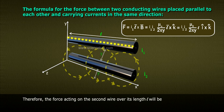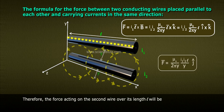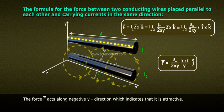Therefore, the force acting on the second wire over its length L will be F bar equals to I2 L bar into B bar equals to mu naught by 2 pi Y I1 I2 L i cap into k cap. F bar equals to mu naught by 2 pi Y I1 I2 L j cap.